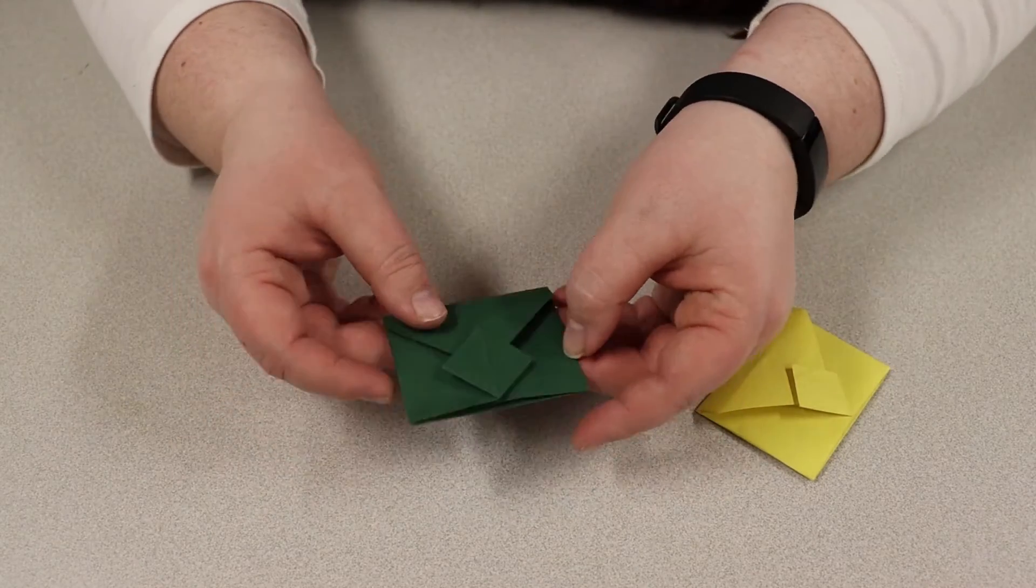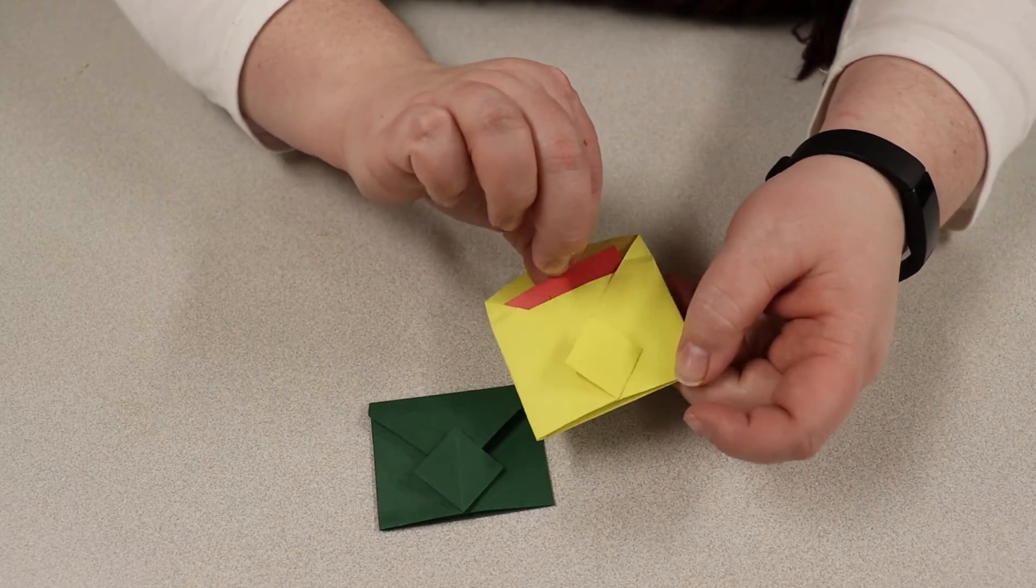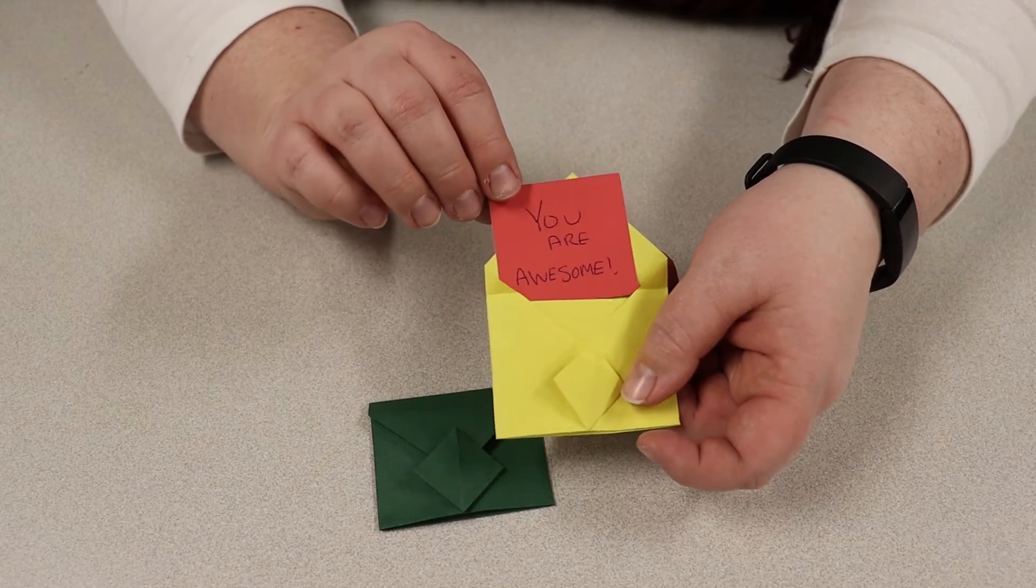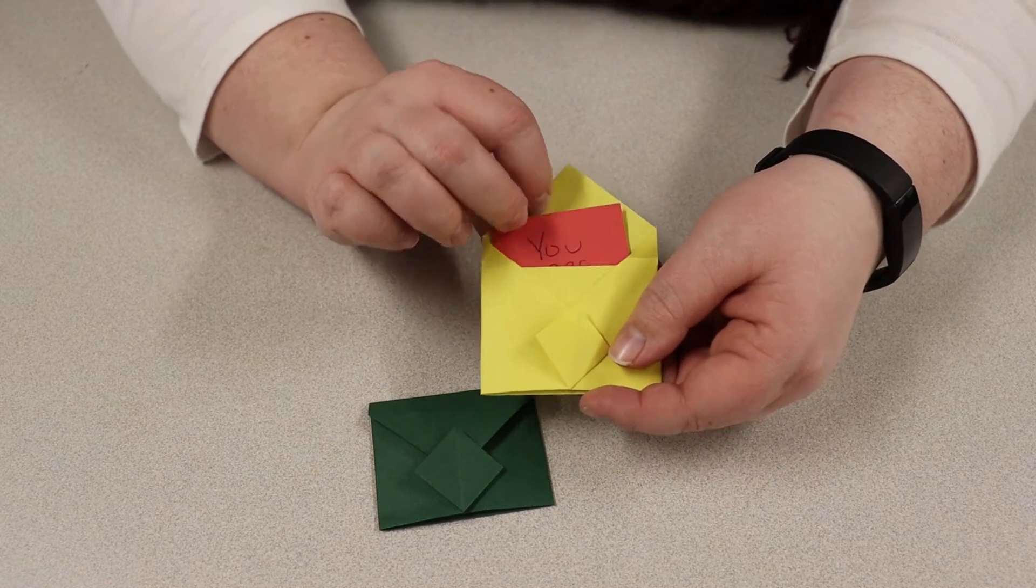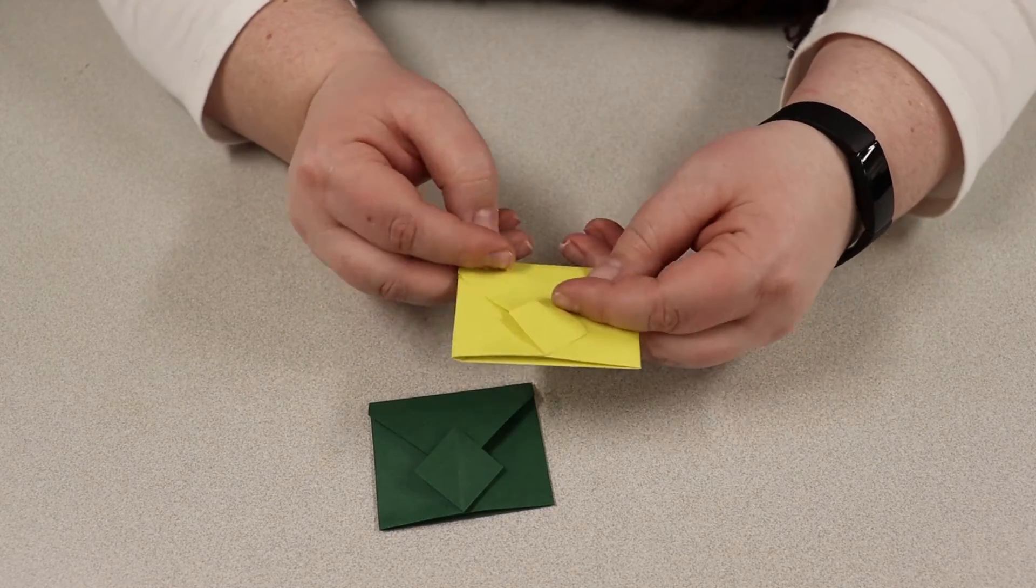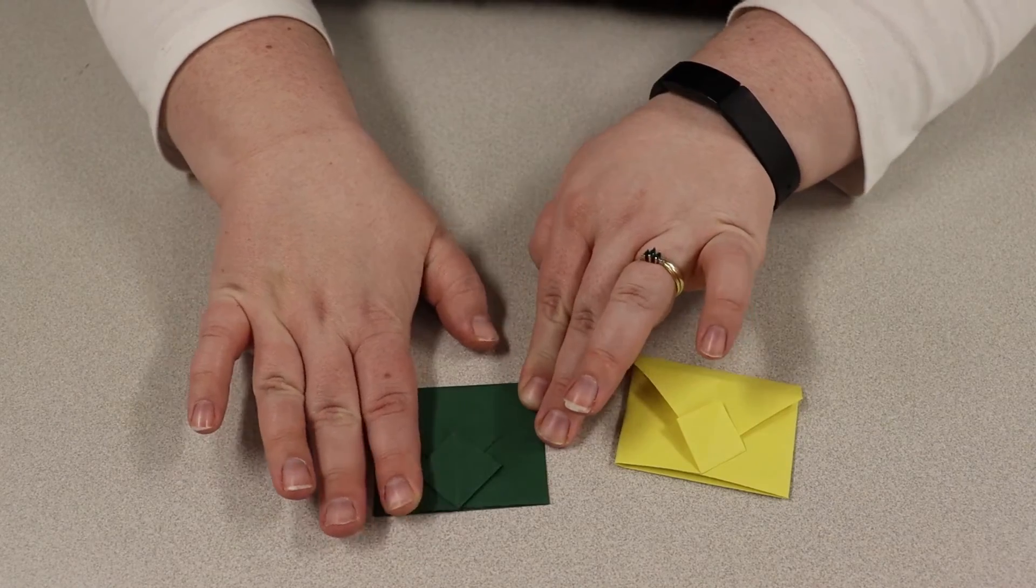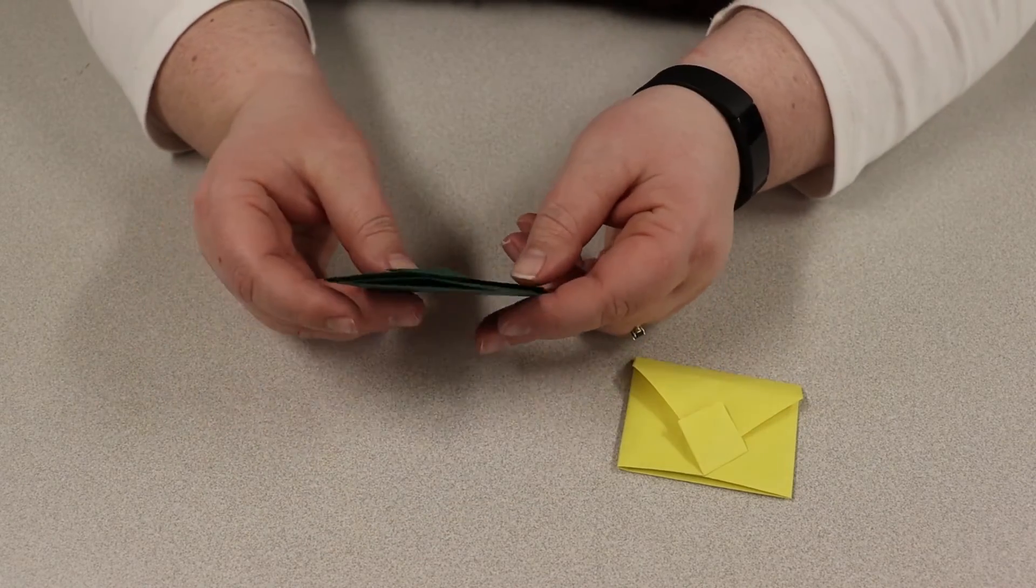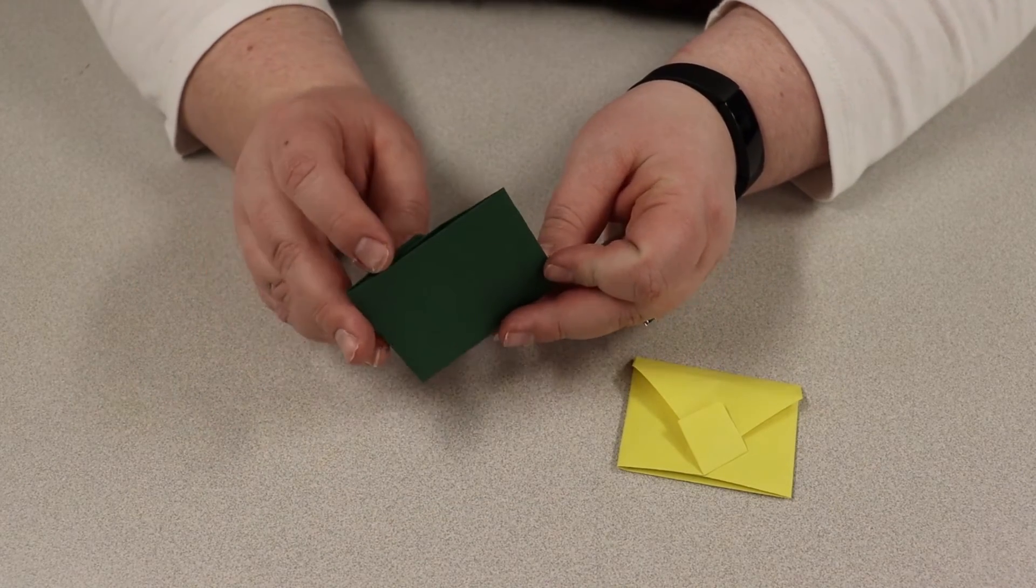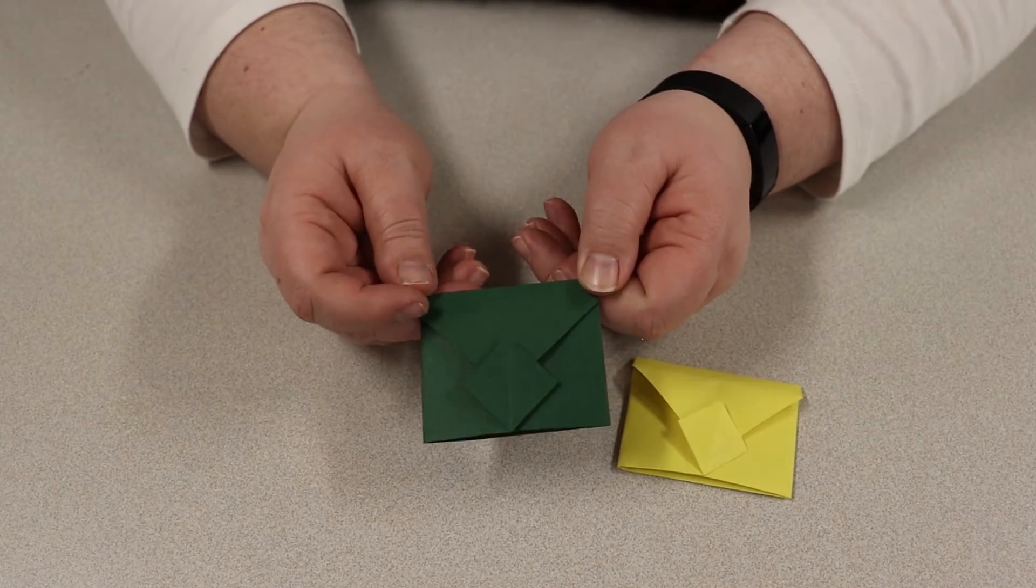So with these, you can hand them out to friends. You can have them have little fun messages inside of them as well here. So you just tuck in your fun little message. You close this up and give it to a friend. Hope you had fun making these little envelopes. They would not go through the mail sorter here because it does have an opening. So you can't send these through the mail.